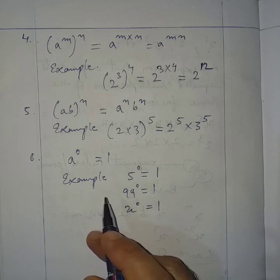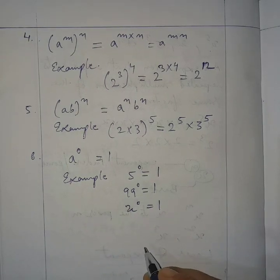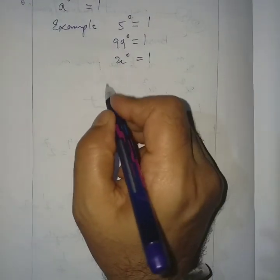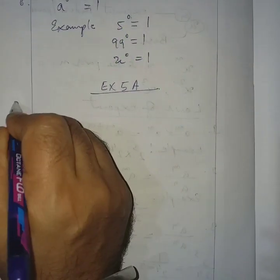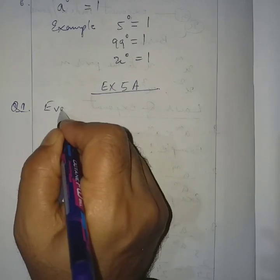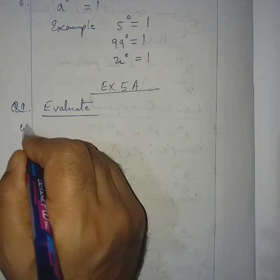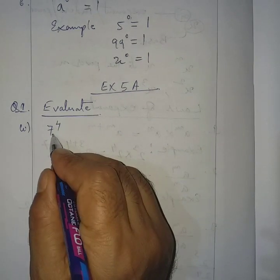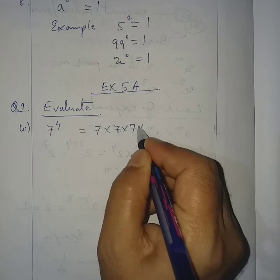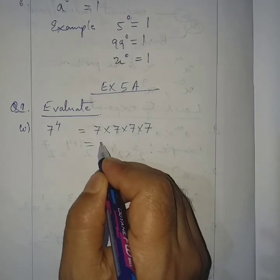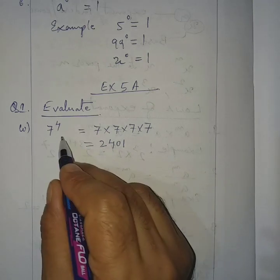We have to use these laws in our solutions and exercises. Now let us go to Exercise 5A, Question number 1: Evaluate — which means find the value. Number 1: 7 to the power 4 = 7 × 7 × 7 × 7 = 2401. We have evaluated the value of this exponential form.